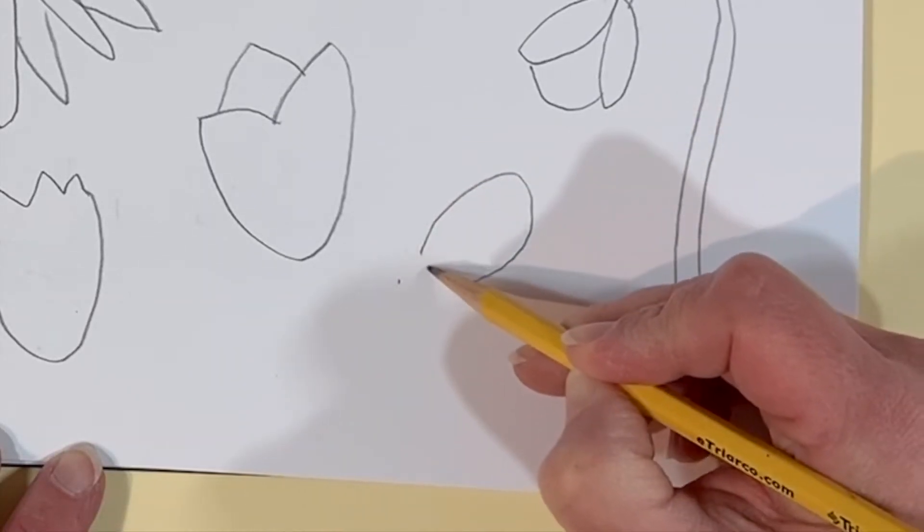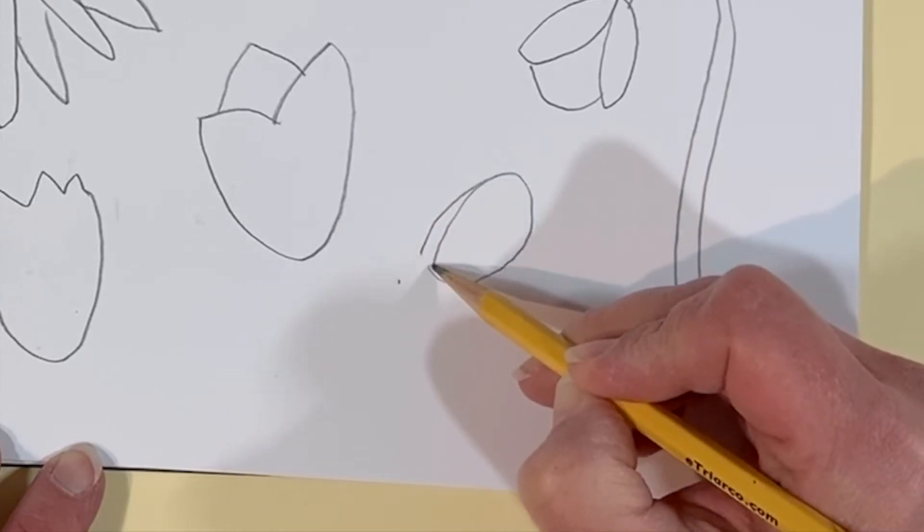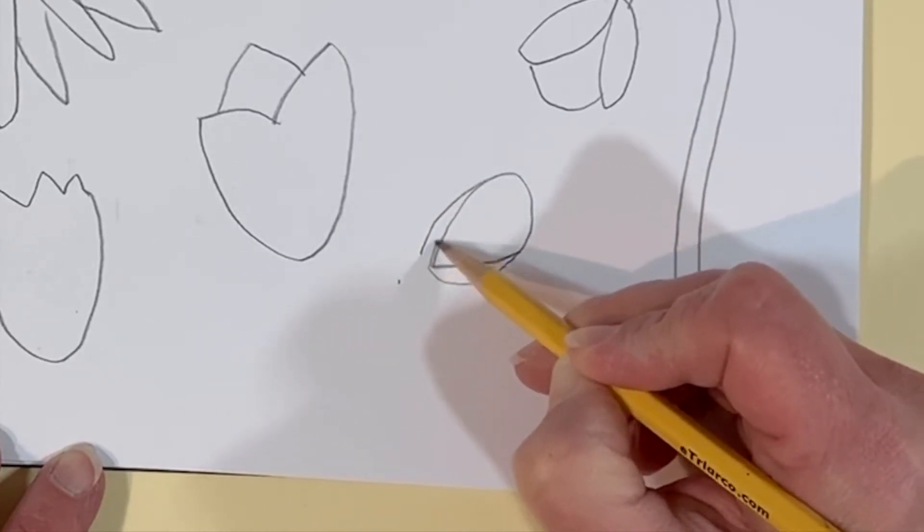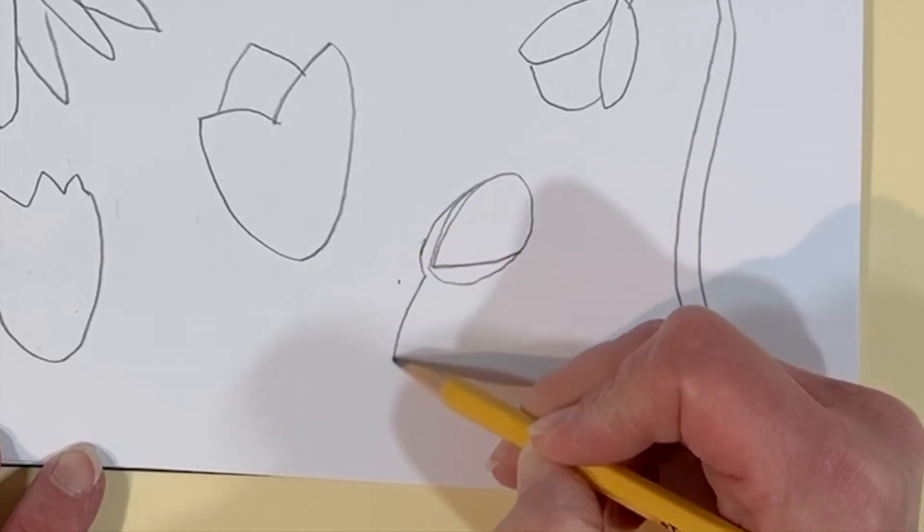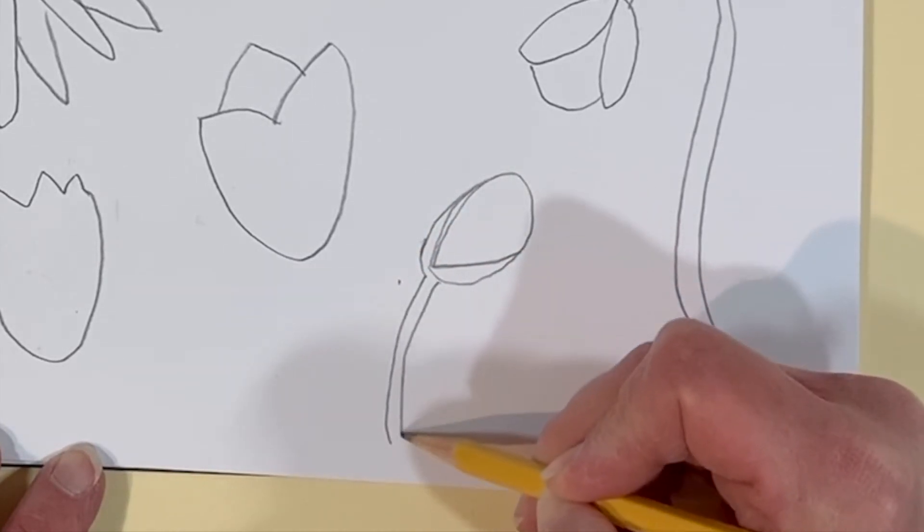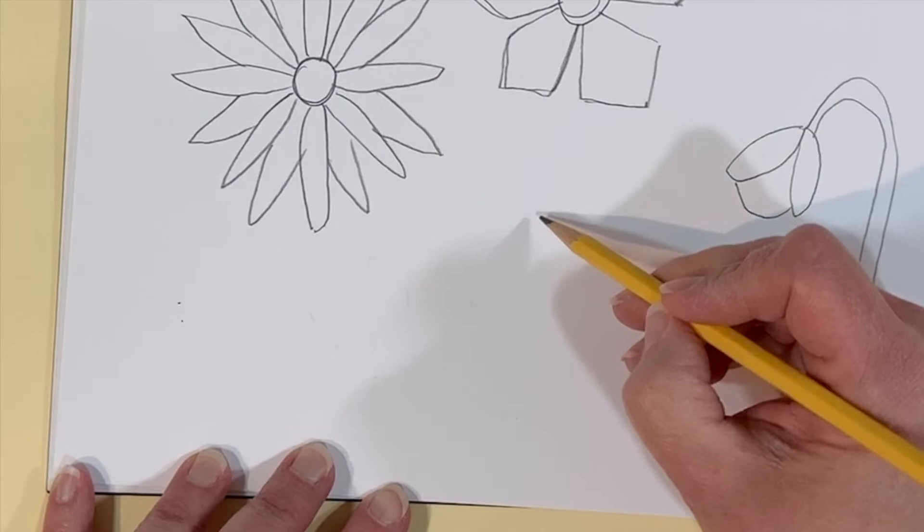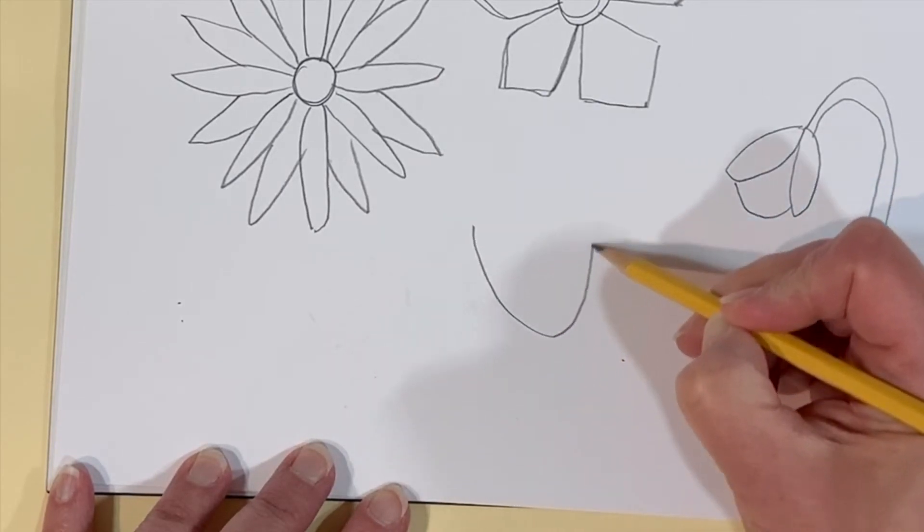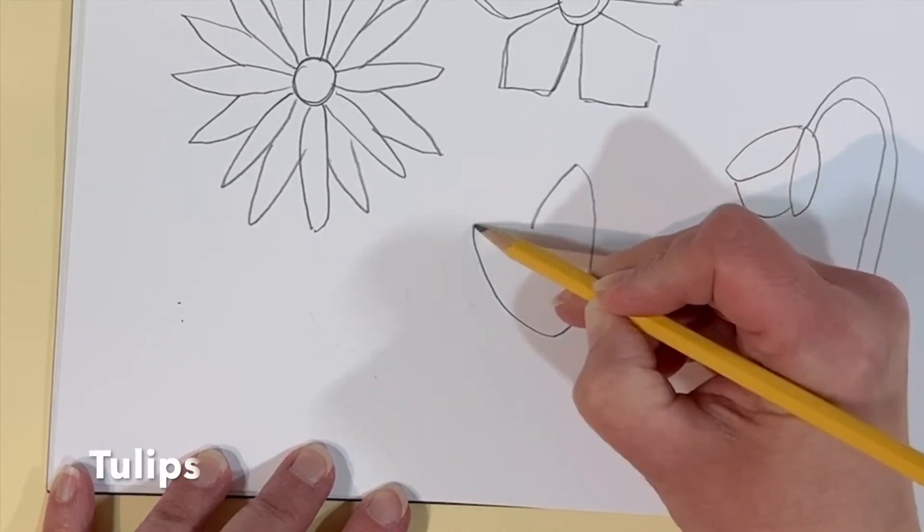This is the same kind of flower but this time I started with an oval and I made sort of a V shape in the middle and attached the stems there.